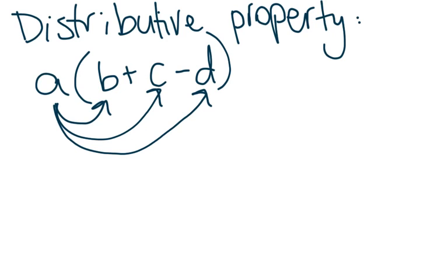The distributive property tells us how to multiply a single term such as A by multiple terms that are being added or subtracted together within parentheses.